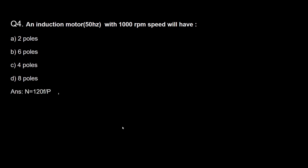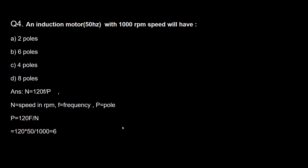Next question: an induction motor operating at 50 Hz with 1000 RPM speed will have how many poles — 2, 6, 4, or 8 poles? In an induction motor, synchronous speed Ns = 120f/P, where f is frequency and P is the number of poles. Substituting the values, P = 120 × 50 / 1000 = 6 poles. The correct option is option B.